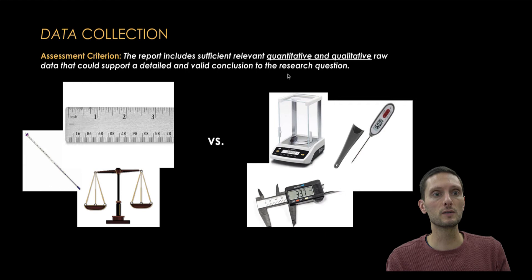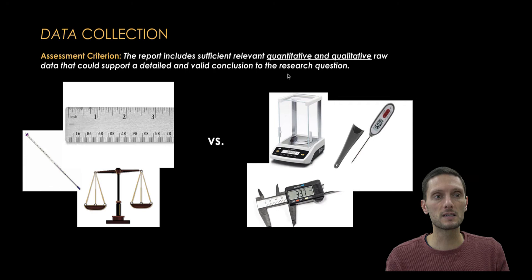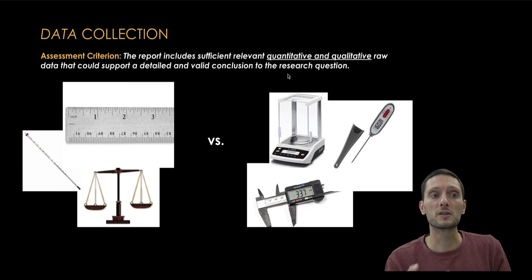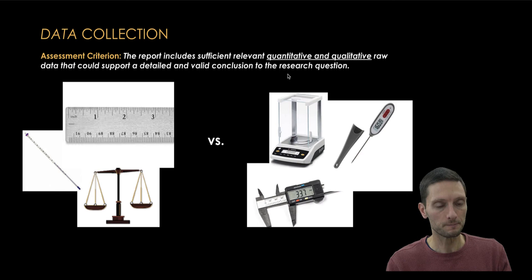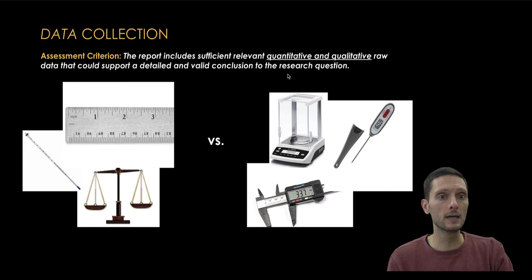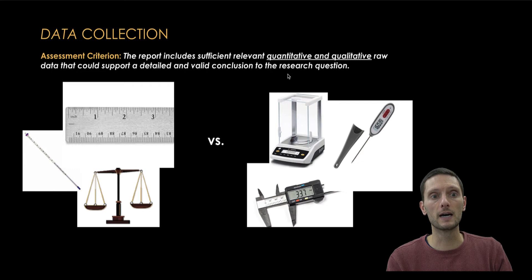The first component of the analysis criterion includes sufficient, relevant, qualitative and quantitative raw data that could support a detailed and valid conclusion to the research question. Here I've got pictures of different ways to collect data. On the left hand side we have analog measurements like a ruler or thermometer, versus digital measurements like a digital thermometer, digital scale, or digital caliper. Digital tools typically provide more precise, better quality measurements and represent quantitative forms of measurement, which are best for answering a research question.